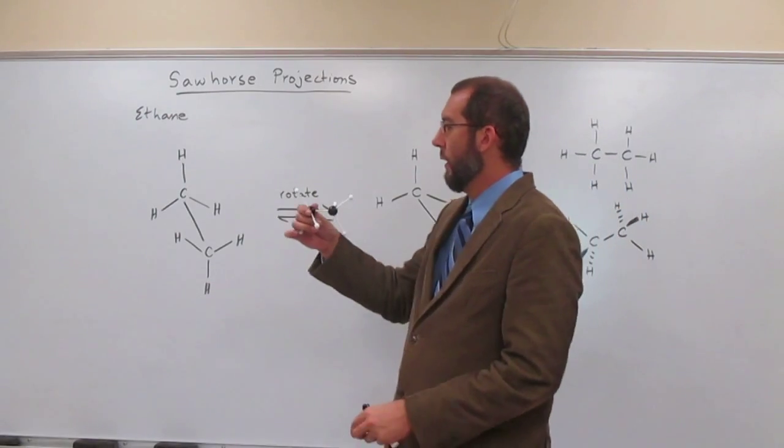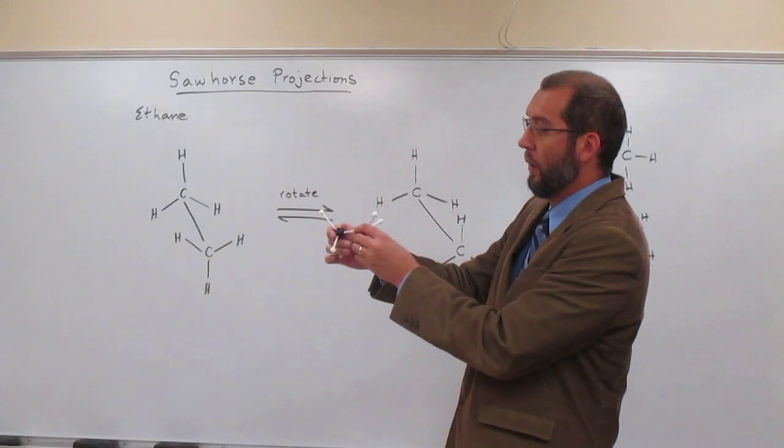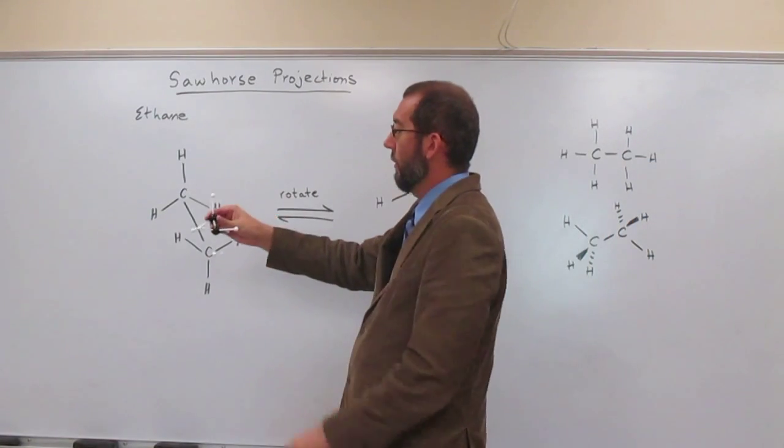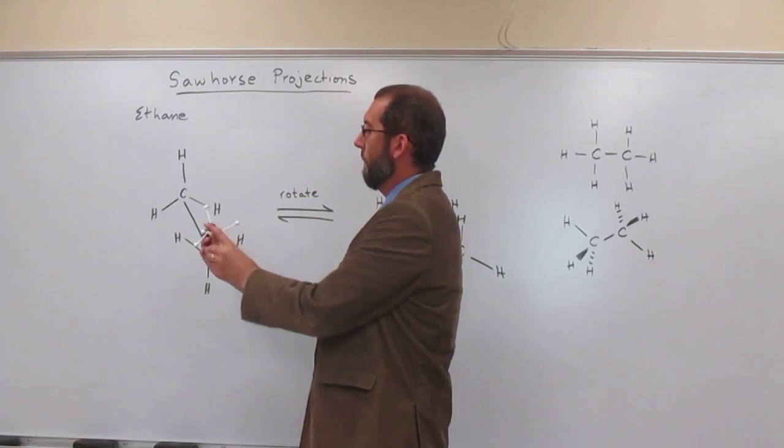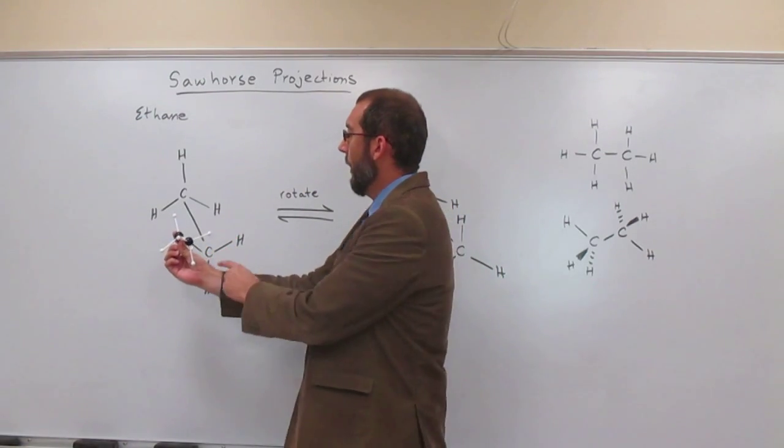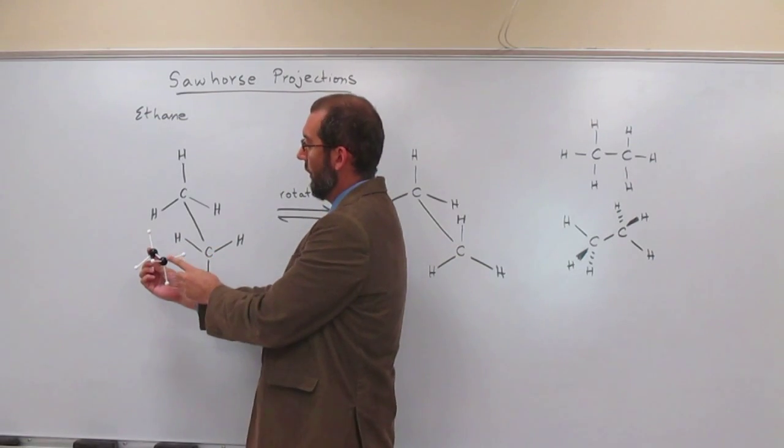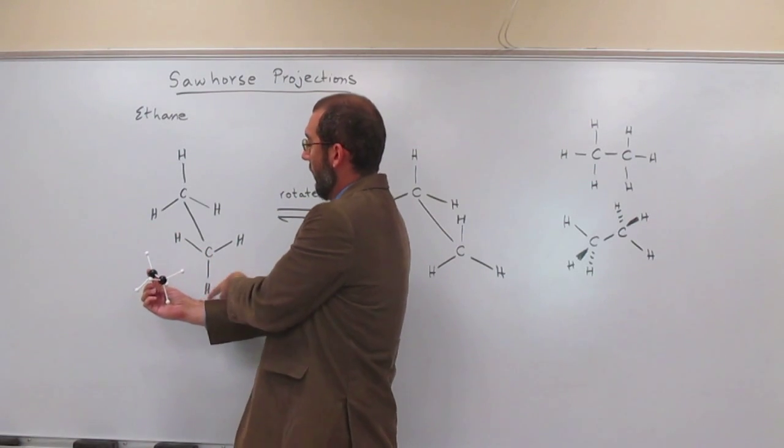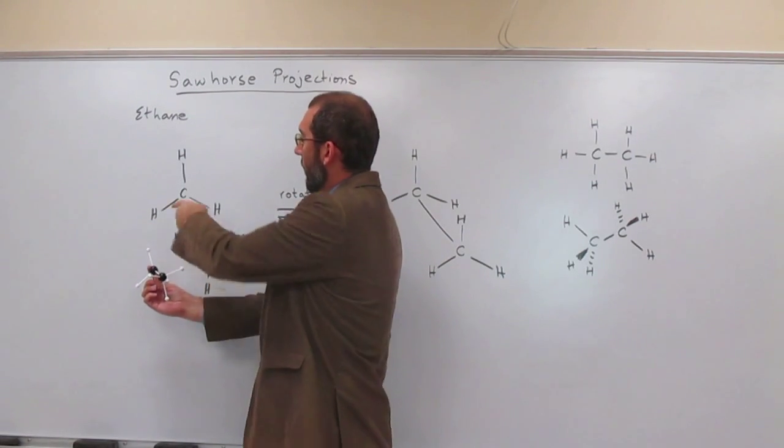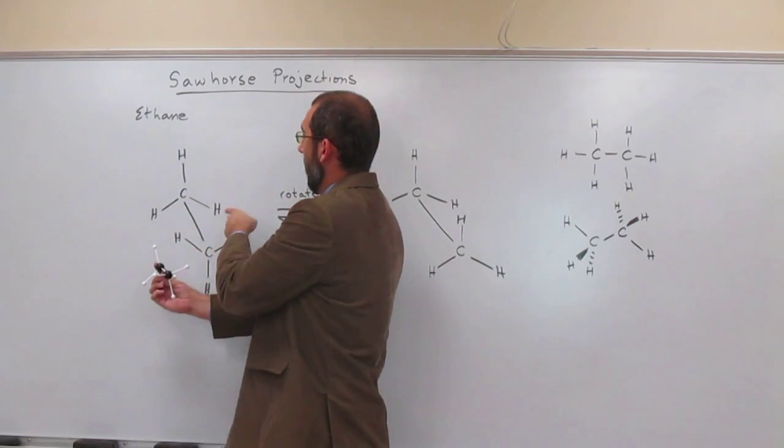It's just rotated from this projection to a projection like this. So hopefully you all can see that the sawhorse projection shows this carbon in front being this carbon in front, with this hydrogen being here, this hydrogen being here, this hydrogen being down there. And then hydrogen 1, hydrogen 2, hydrogen 3.